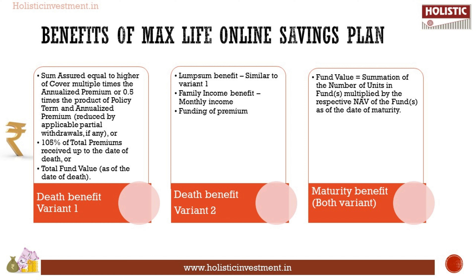For Variant 2, there are three benefits. The first is Lump Sum Benefit, which is similar to the death benefit under Variant 1. Next is Family Income Benefit — a Family Income Benefit equal to 1% of sum assured will be paid each month starting from the policy anniversary date of every month following or coinciding with the date of death. Next is Funding of Premium — the company will fund all future and outstanding premiums as and when due under the policy. Finally, the fund value shall be paid as on the date of maturity.